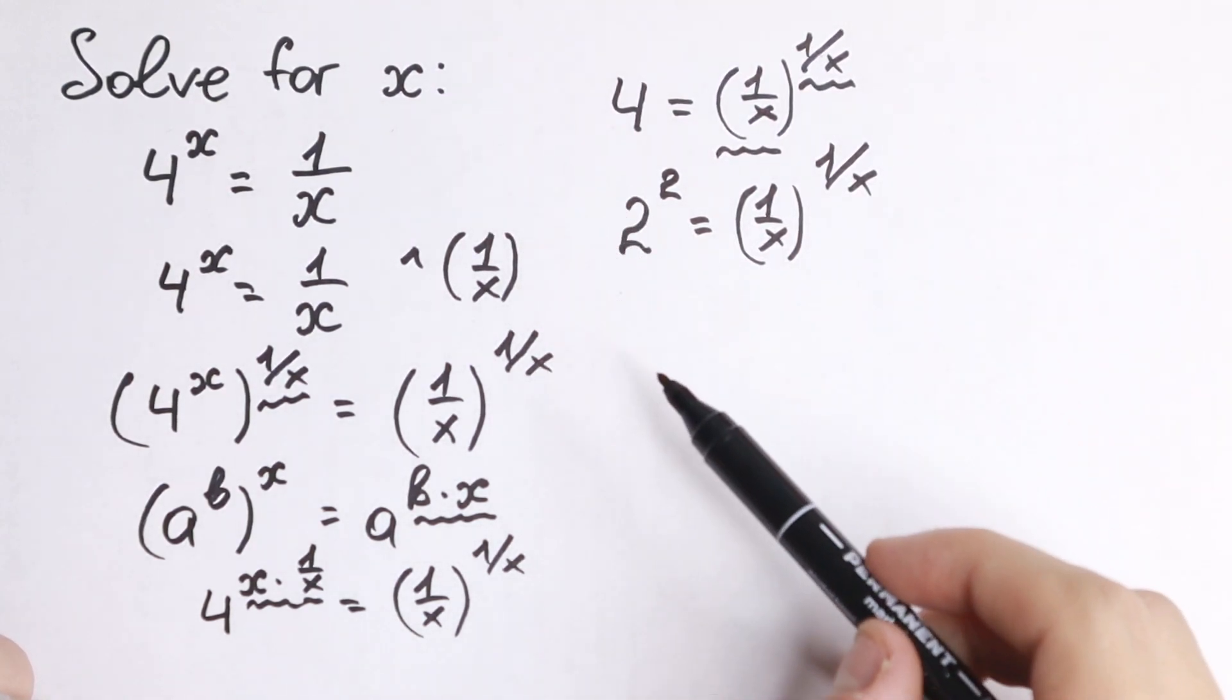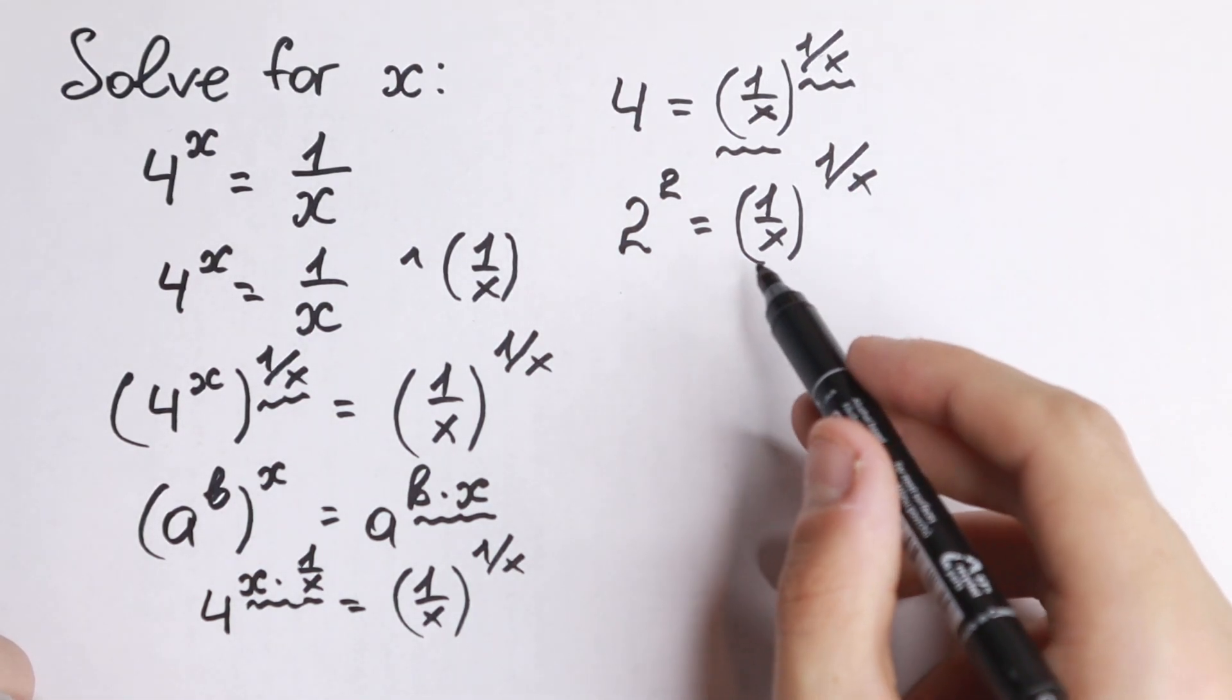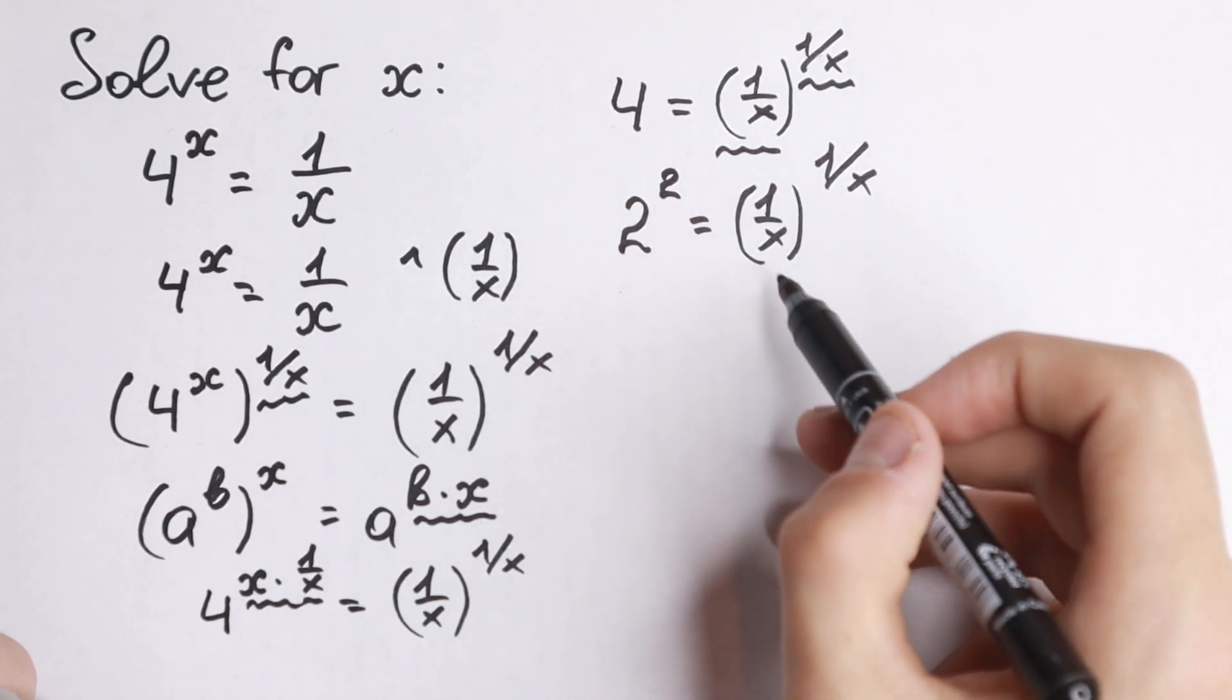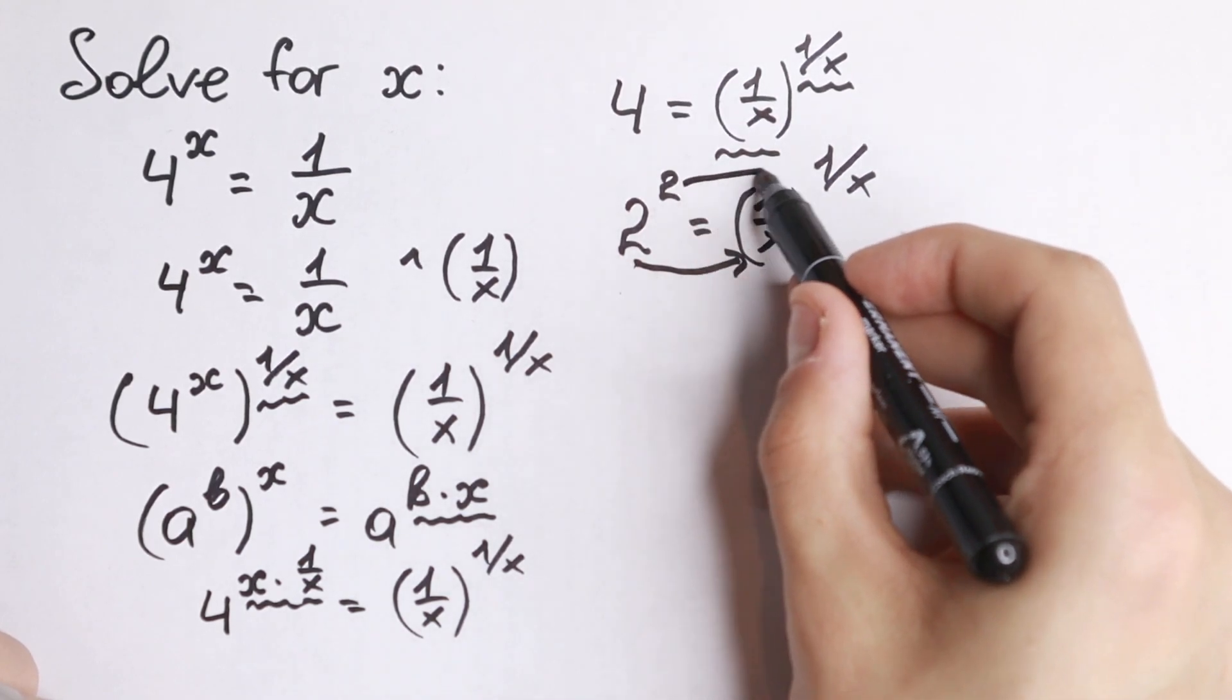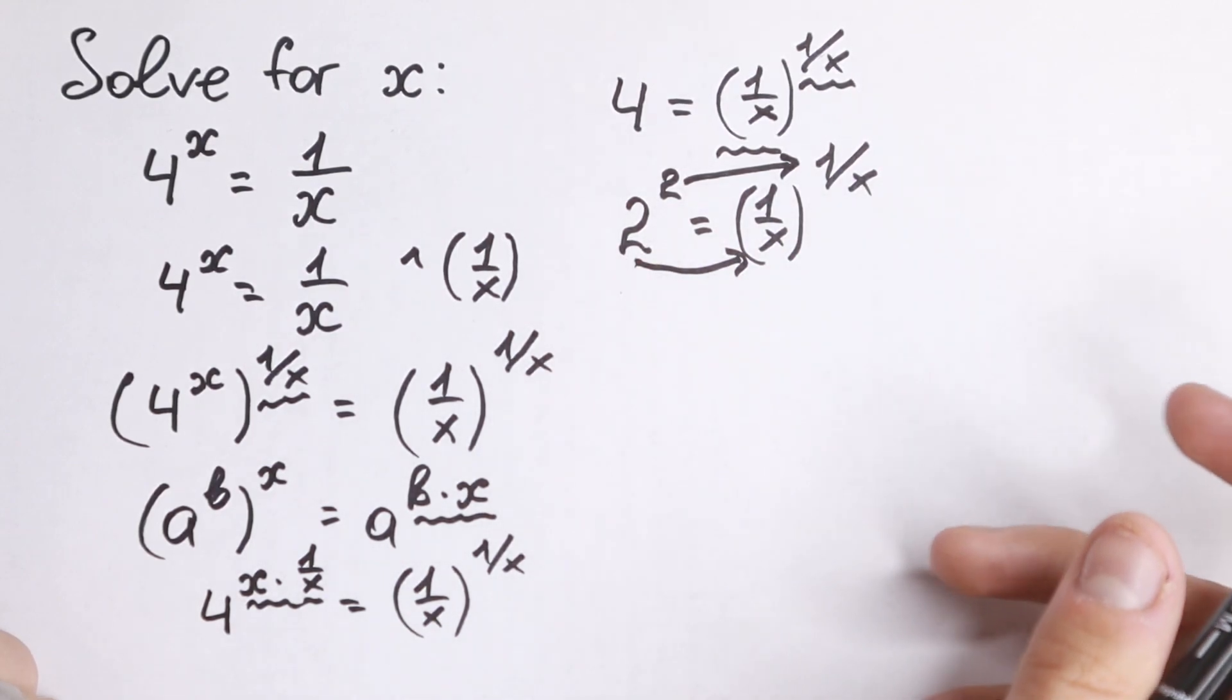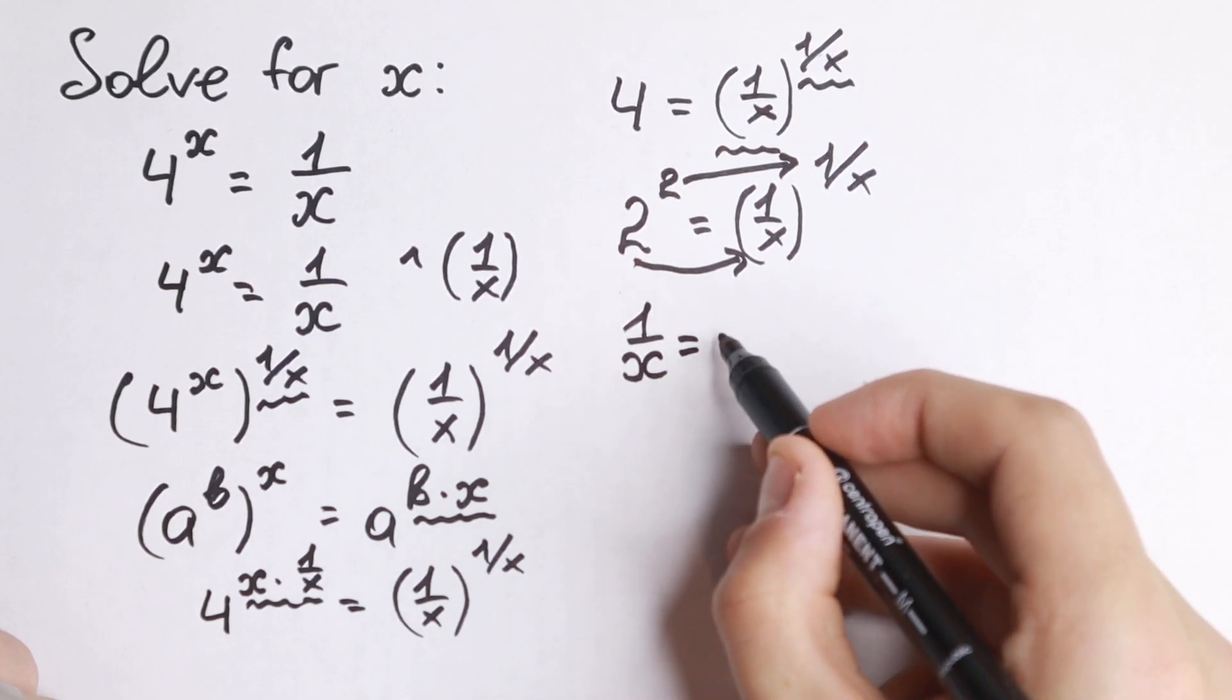Nothing changed, we just expressed 4 as 2 squared. But right now we can easily write that 2 equals 1 over x, because we have the same base and same exponent on both sides. The only way this equation works is when base equals base and exponent equals exponent. In our case both are the same, so we have 1 over x equal to 2.